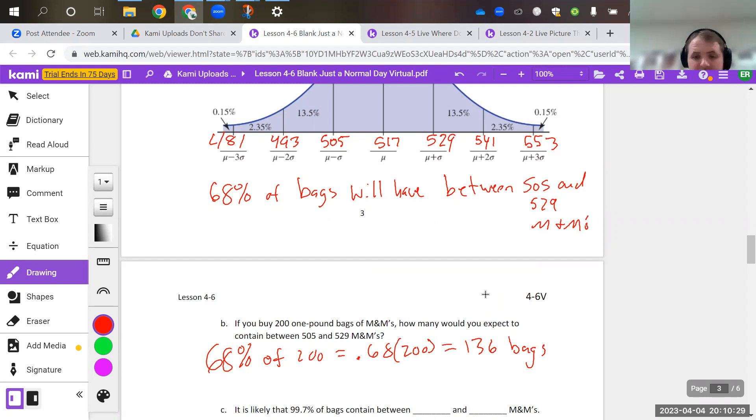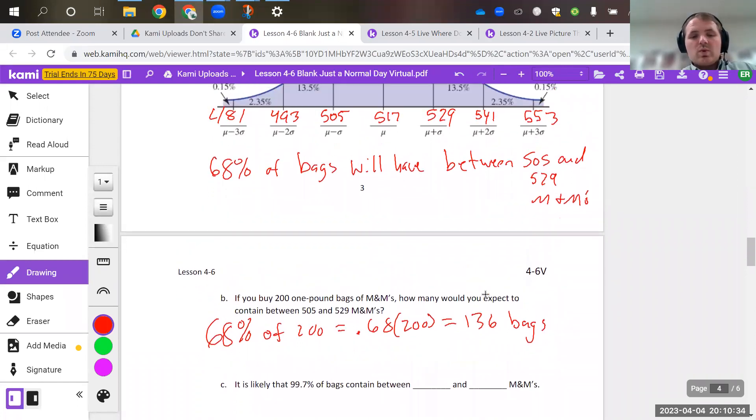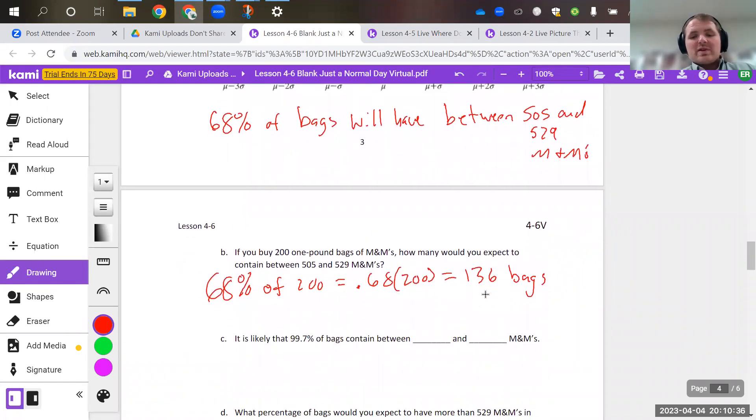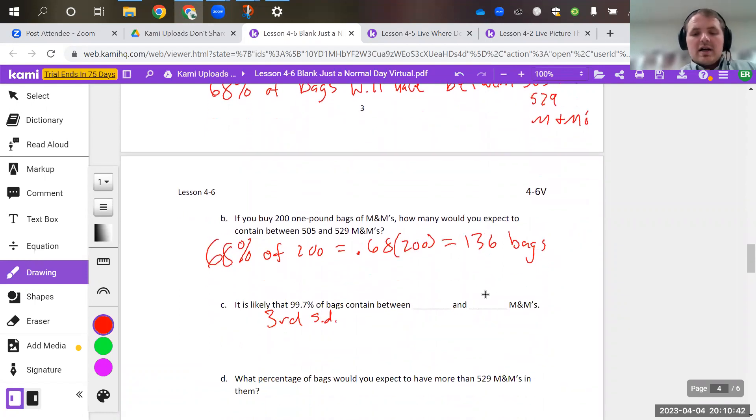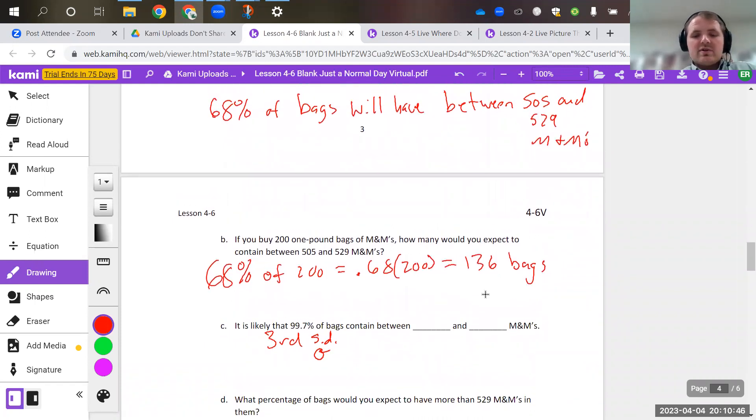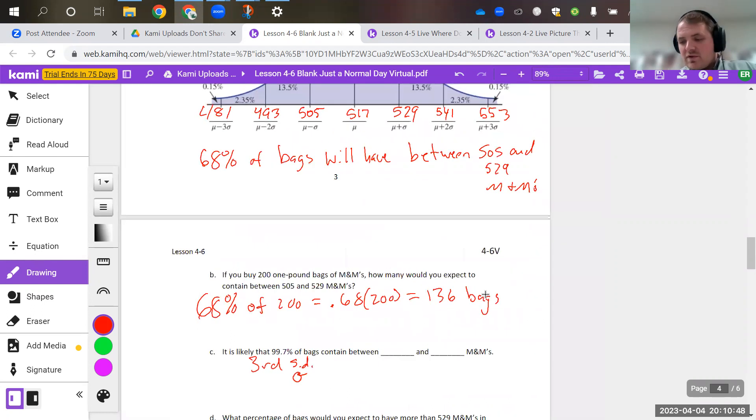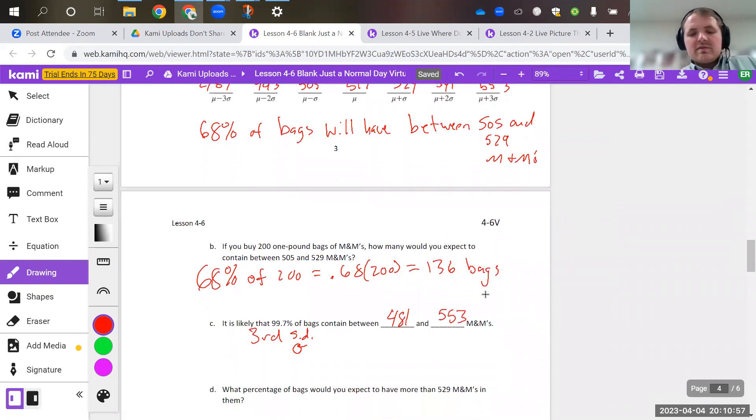So the next question says, it's likely that 99.7% of bags contain between what? So that would get you to that third standard deviation. Again, the symbol for that is sigma. It'll look like this, a little cursive O. And that will get you from 481 to 553. So just moving right along here.